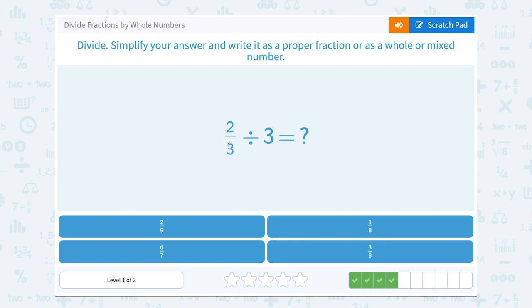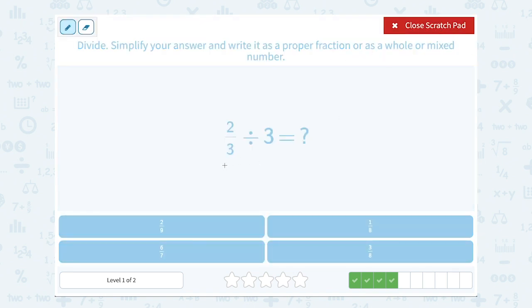2 thirds divided by 3. Okay, well, I'm going to leave my first fraction as 2 thirds. And then remember the rule is multiply by the reciprocal or the inverse. So 3 as a fraction is 3 over 1. Remember, any whole number, you can simply put it over 1 to make it a fraction. And then the inverse of that, or the reciprocal, is when you flip it. So I would make that 1 over 3.